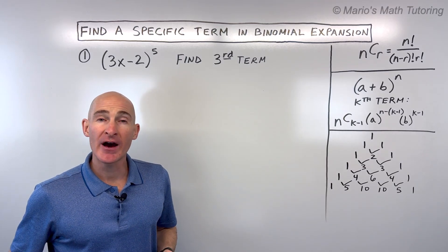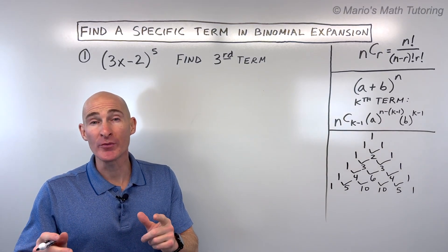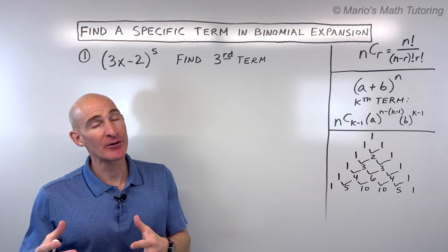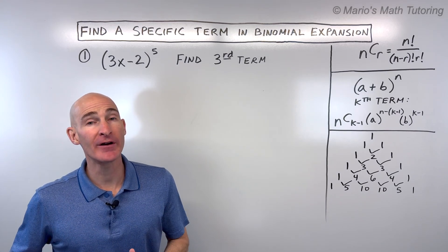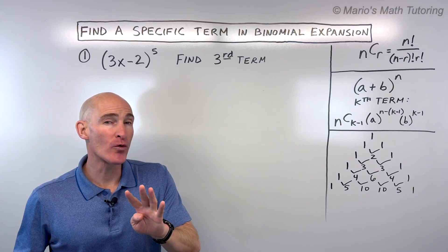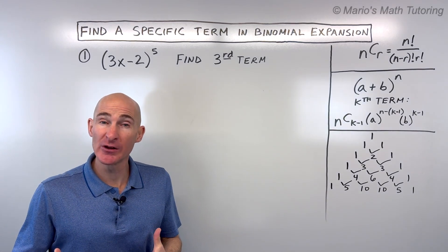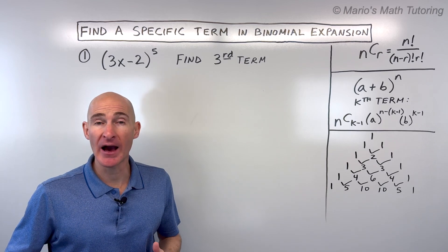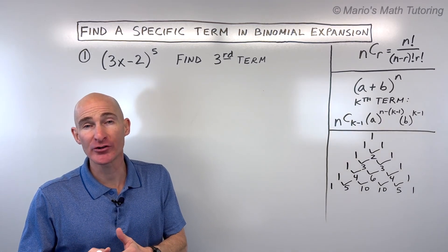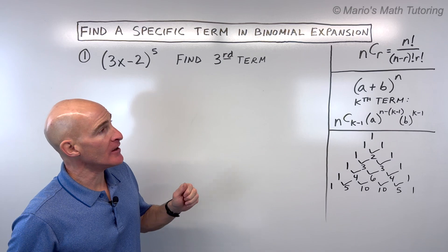In this video, you're going to learn how to find the specific term in a binomial expansion, and I'm going to show you how to do it very quickly. We're going to go through four examples together. I want to show you a little background on how this works and how to zero in on a particular term. So let's dive in.